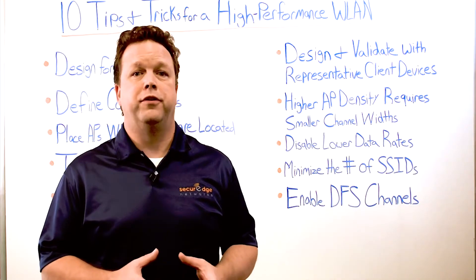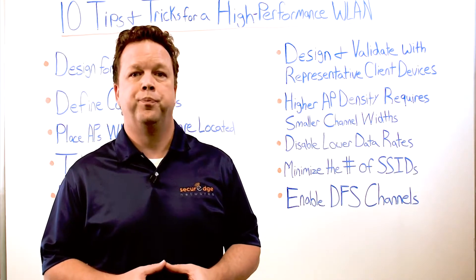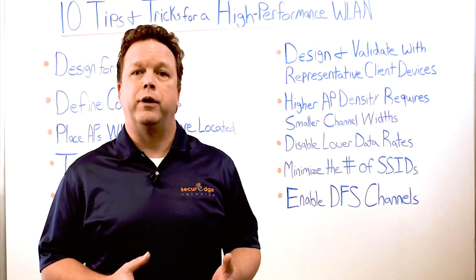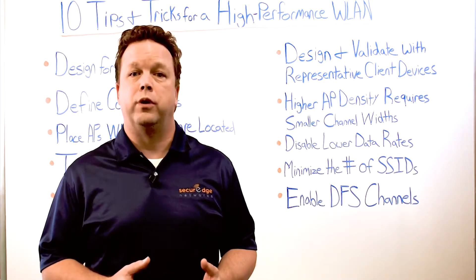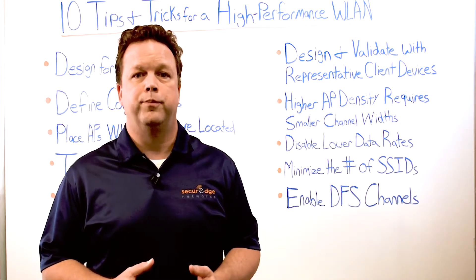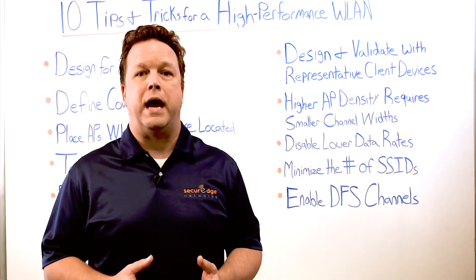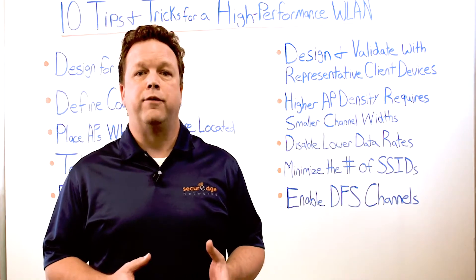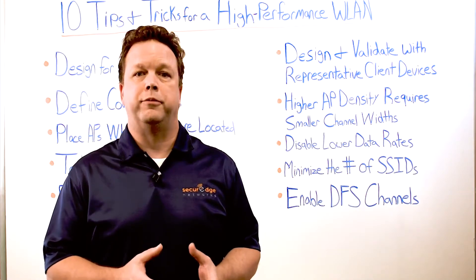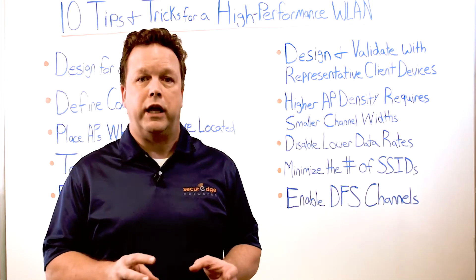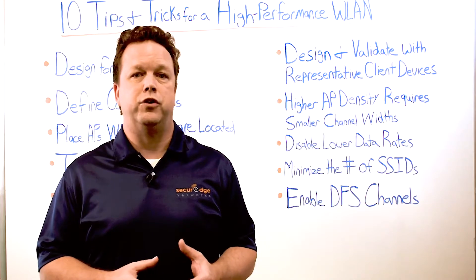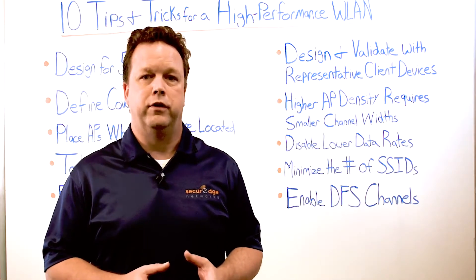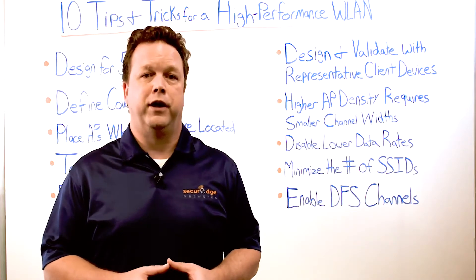Another tip is to disable lower data rates to improve network performance. Removing legacy data rates of 1 through 11 Mbps from the wireless LAN is helpful, as these are only used to support legacy 802.11b clients which are largely no longer in use. Disabling these rates reduces overhead and forces clients to connect to APs closer in proximity, avoiding sticky client issues where devices connect to APs too far away to support symmetrical transmit and receive operations. Perform this for both the 2.4 and 5 GHz radios.